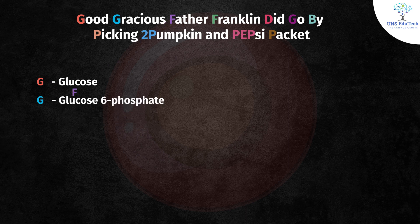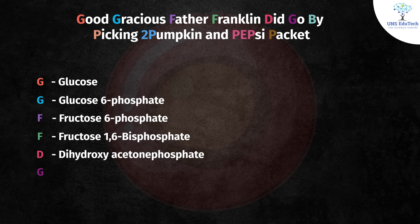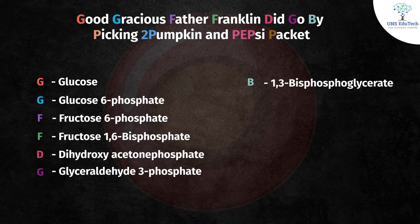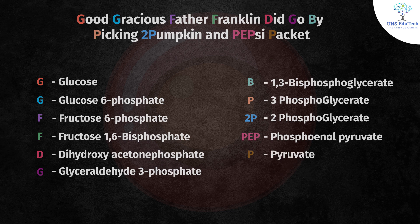F from 'father' stands for fructose 6-phosphate; F from 'Franklin' stands for fructose 1,6-bisphosphate; D from 'did' represents dihydroxyacetone phosphate; G from 'go' represents glyceraldehyde 3-phosphate; 'by' represents 1,3-bisphosphoglycerate; P from 'picking' stands for 3-phosphoglycerate; '2P' from '2 pumpkin' represents 2-phosphoglycerate; PEP from 'Pepsi' represents phosphoenolpyruvate; and finally P from 'packet' represents pyruvate.